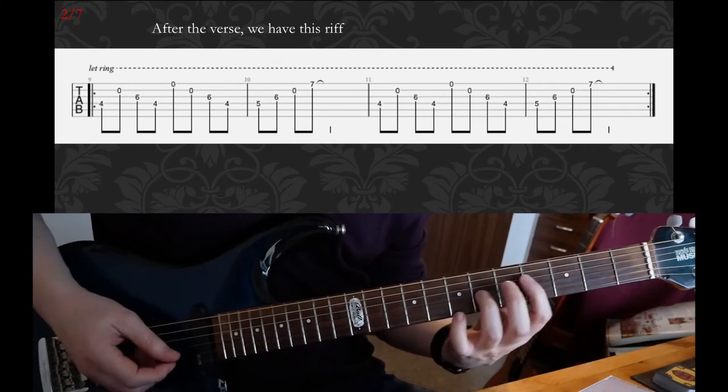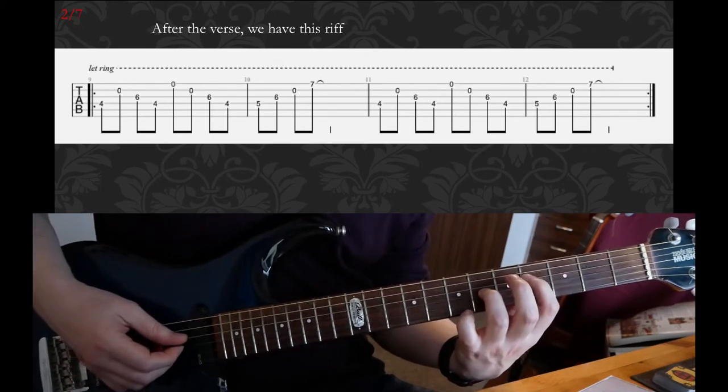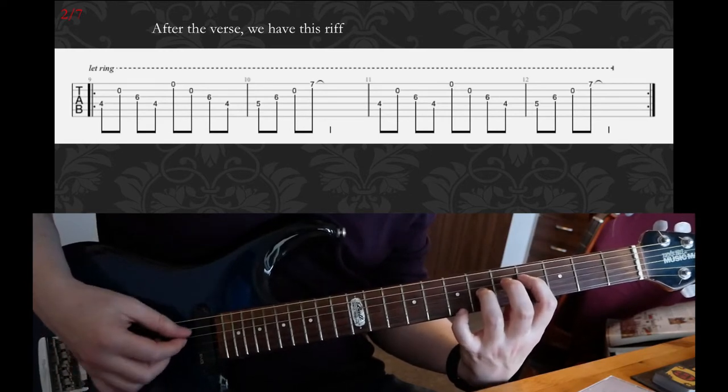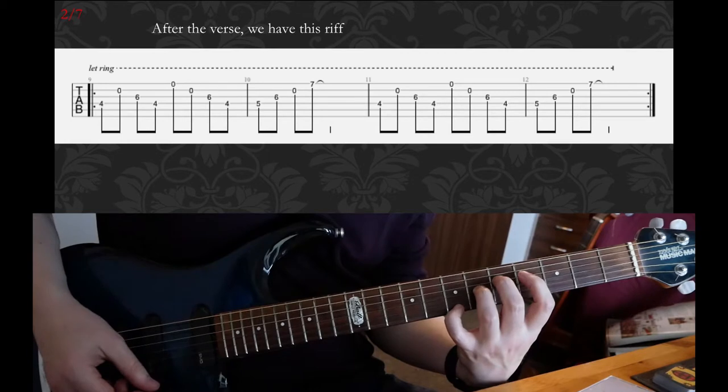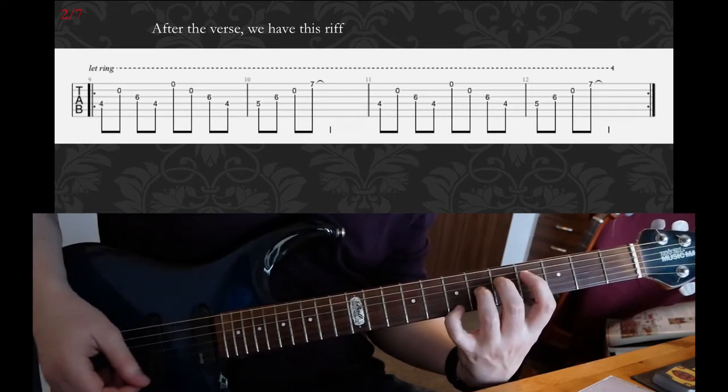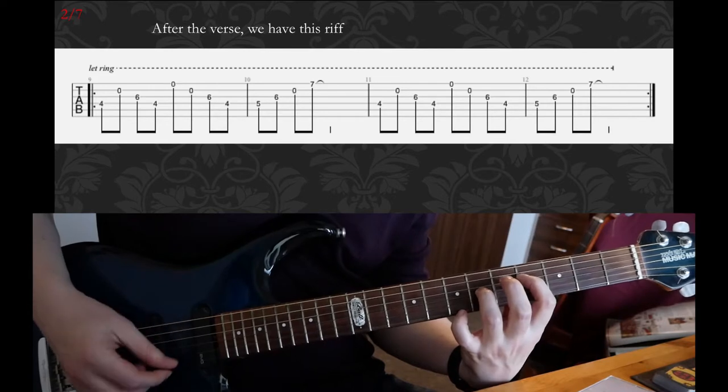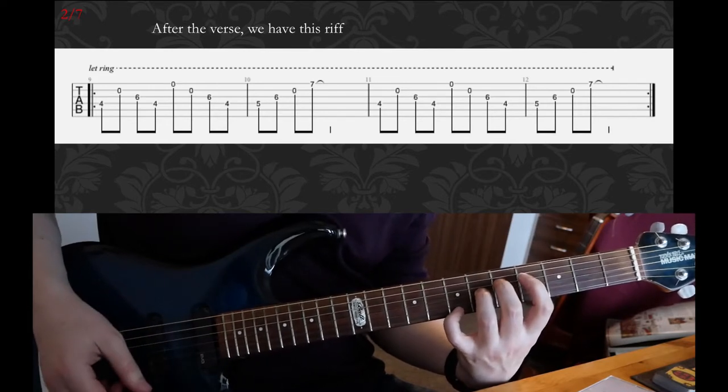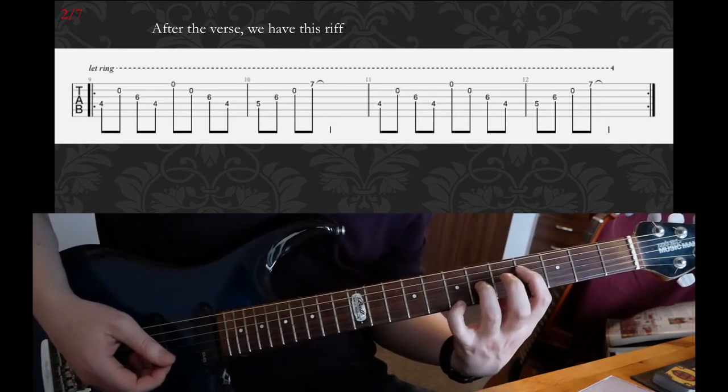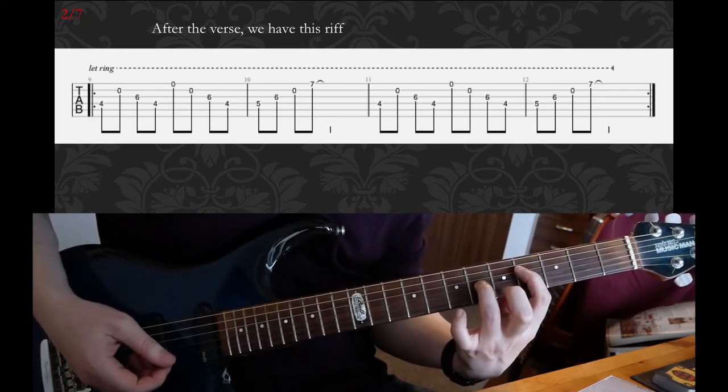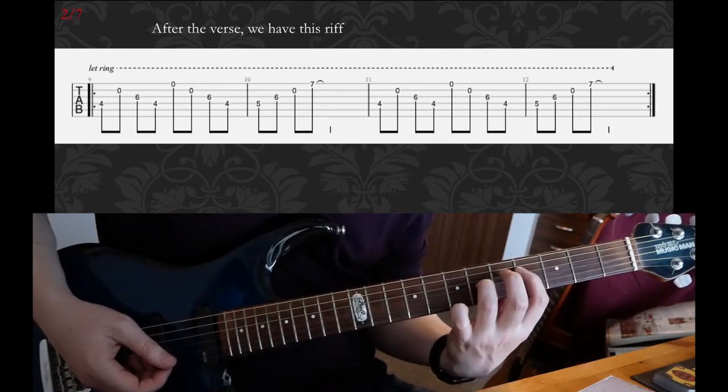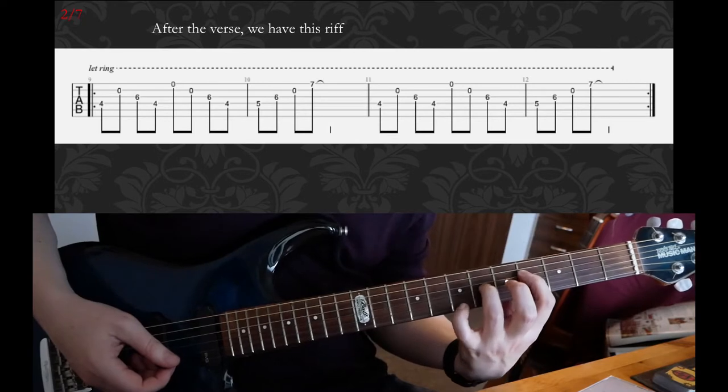After the verse, you're gonna do a different riff. For this, basically hold your fingers like this: 4 on D and 6 on G. Keep your middle finger ready above the fifth fret on D. You're gonna need it later.